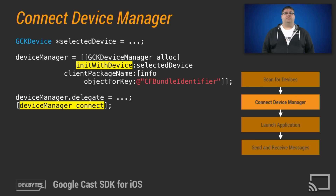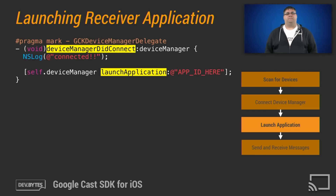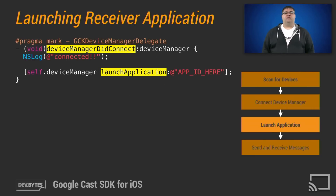To connect to a device, you start by initializing a device manager with the selected device. Now you can connect the device manager. When the device manager connects, the device manager did connect delegate method is called. Now that you are connected, you can launch your application using the application ID you received from the developer portal. Launching the application will cause the HTML5 receiver app to launch, giving you the 10-foot experience.